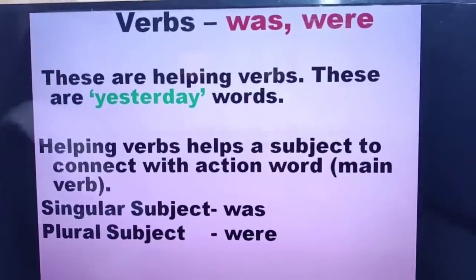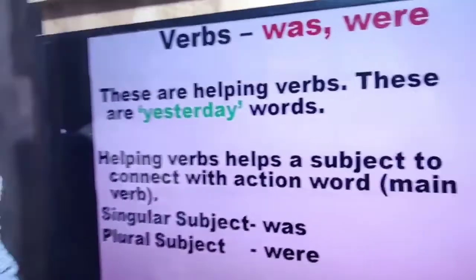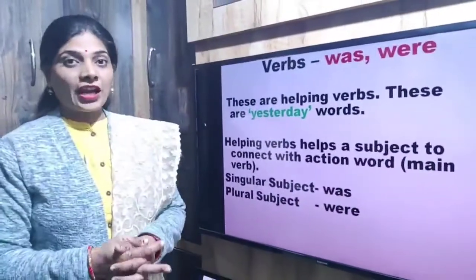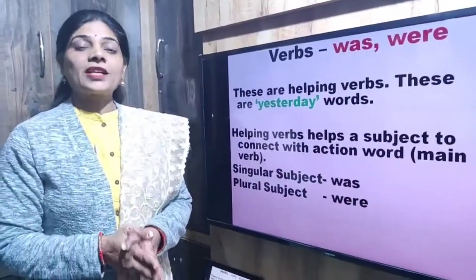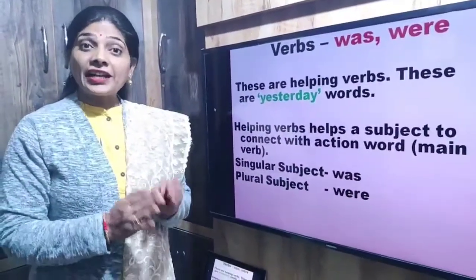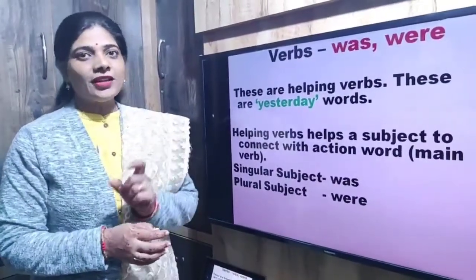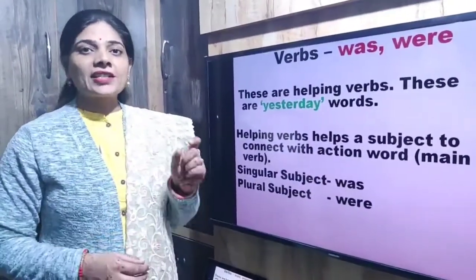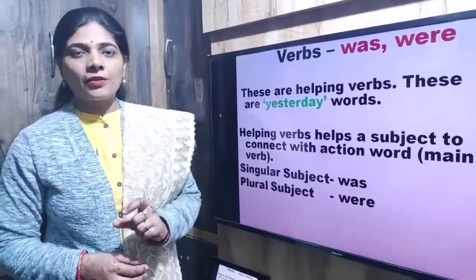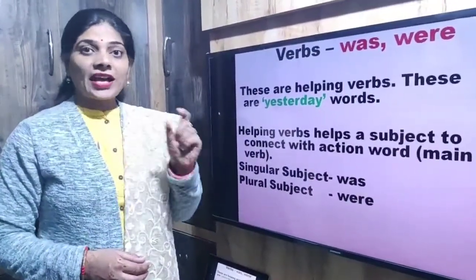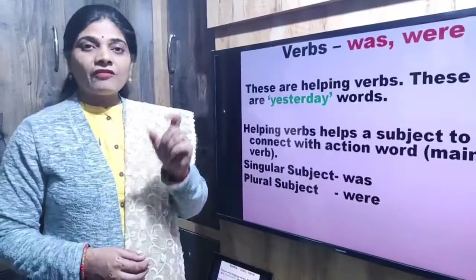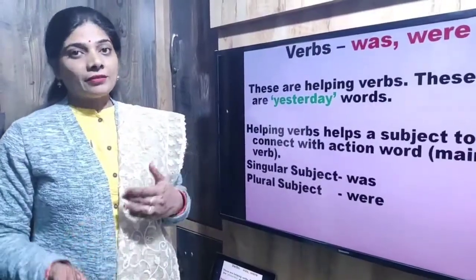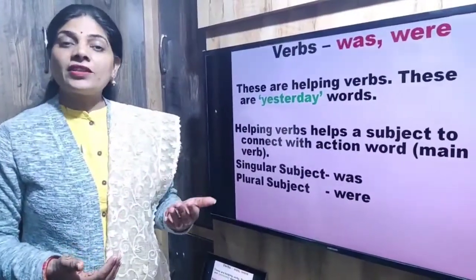Before I start with the use of was and were, let me remind you what helping verbs are. Helping verbs are the verbs which connect the subject to the action word, or you can say which connect the subject to the main verb. In order to link the subject to the main verb, we need a helping verb, and that makes the correct sense of the sentence.